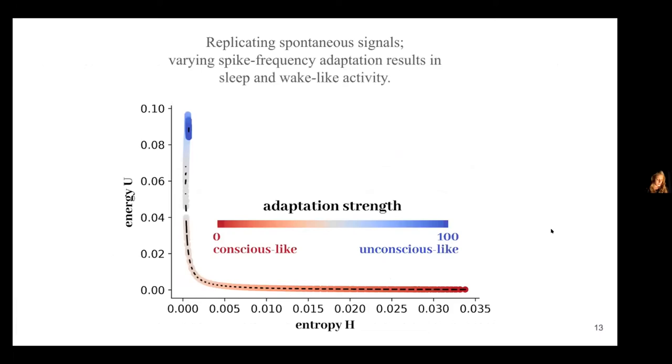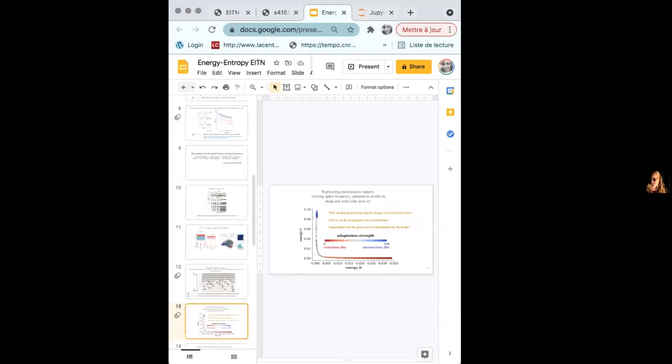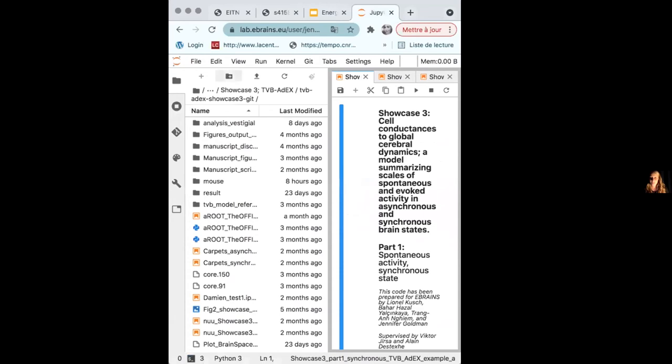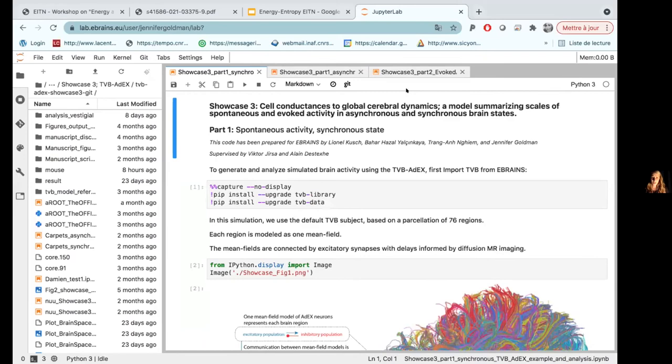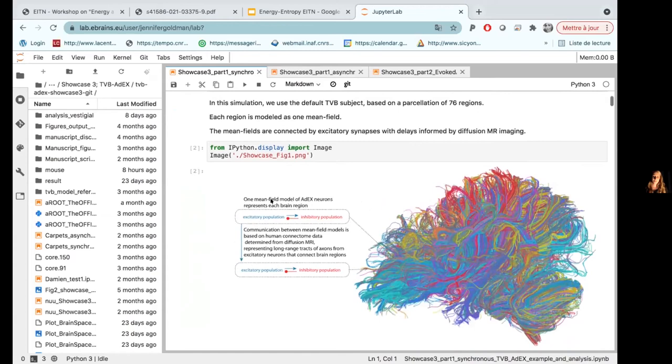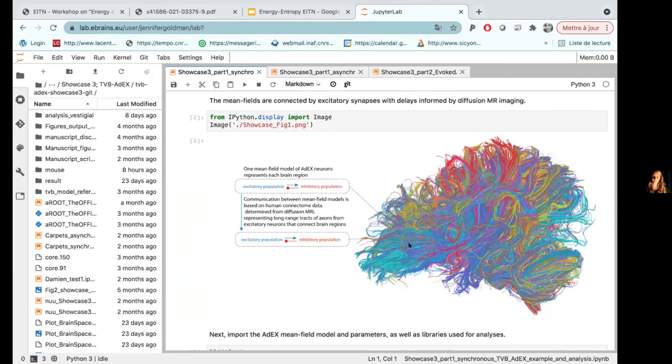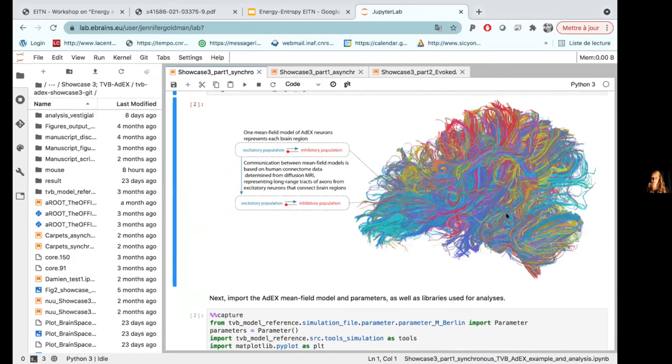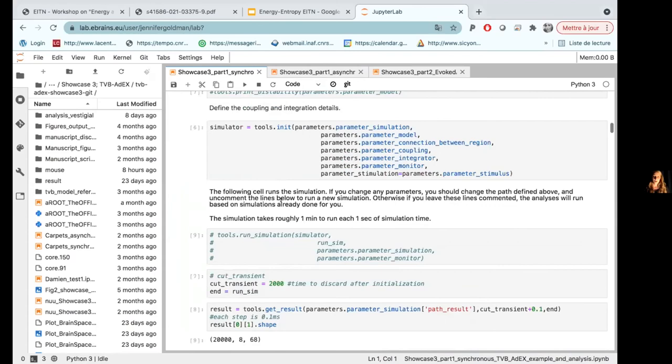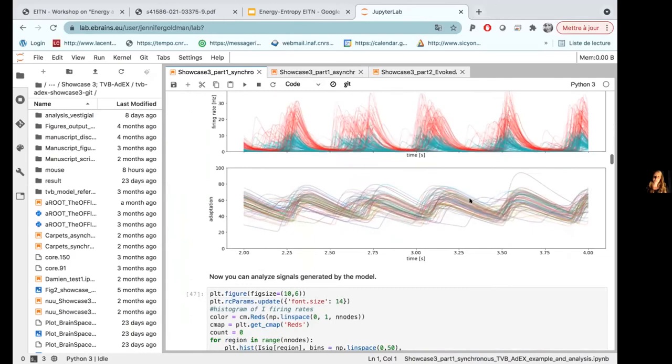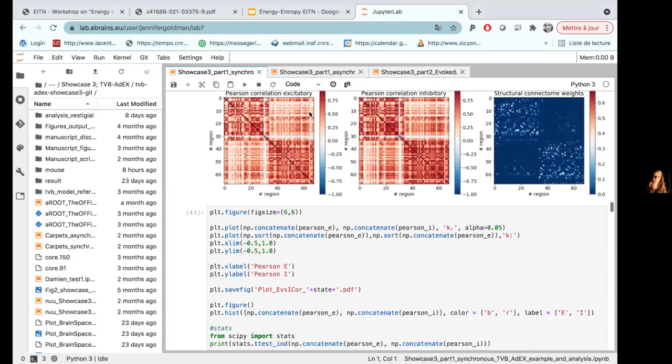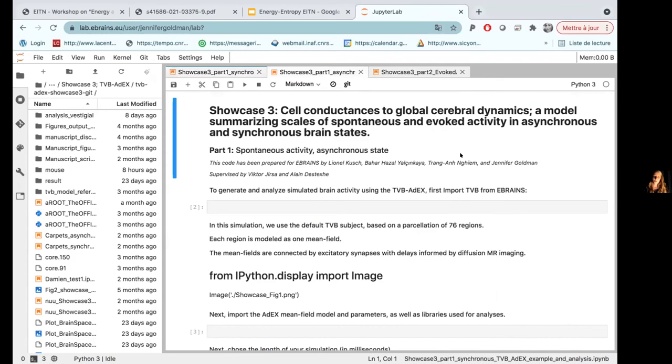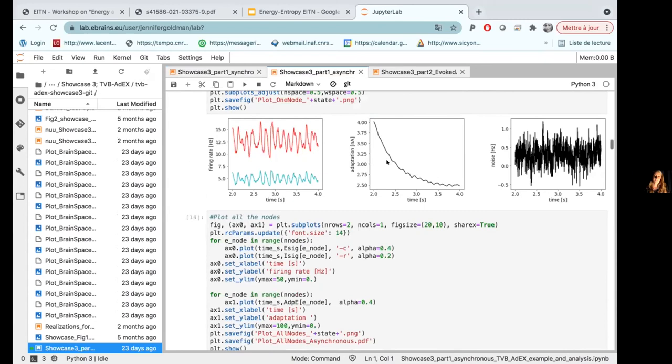I want to show you very quickly this tool that we've released now. It should be public very, very soon for the human brain project. It was one of the showcases where essentially you can run these models by yourself. So you have the excitatory inhibitory populations that represent each of the nodes that are connected together here by the human connectome. But we've now developed this for mouse and macaque as well. And you can put the model either into synchronous states and you can see the different regions being more or less synchronous. You can look at the histograms, the power spectra. You see an emergence of what is about a Delta peak. You can look at the pairwise correlations between the regions, et cetera. Or you can change the spike frequency adaptation to lower values to get more asynchronous regimes.